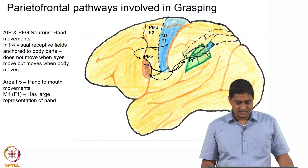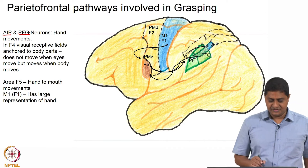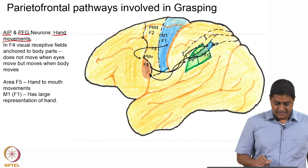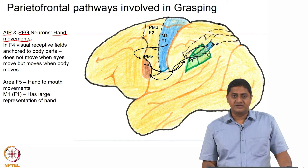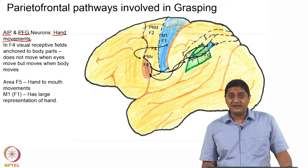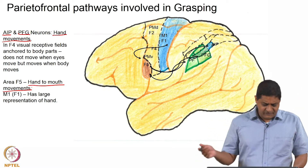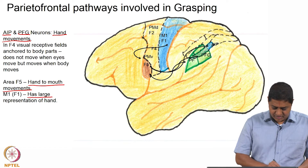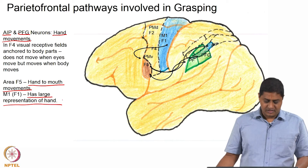We saw in the last class that neurons in AIP and PFG regions are responsible for hand movements. In region F4 there are receptive fields anchored to body parts. These are active when the body moves, but not active when the eyes move — so these are body-related fields. Area F5 also holds neurons that have a specialized function in coordinating hand-to-mouth movements. And the primary motor cortex has a disproportionately large representation of the hand.